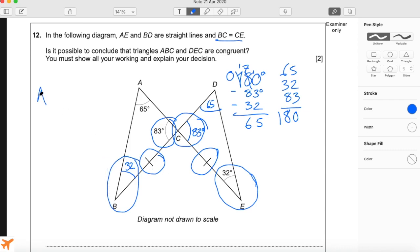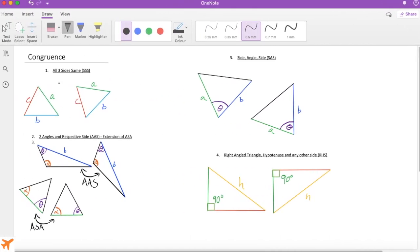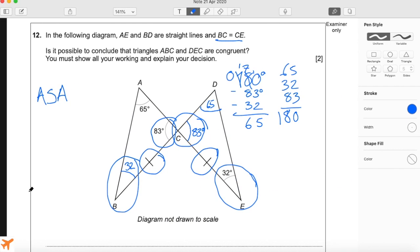I'll just write that down: angle-side-angle. This was rule number 2, angle-side-angle, which was the special case of angle-angle-side. So there we go. We know they're congruent due to angle-side-angle.